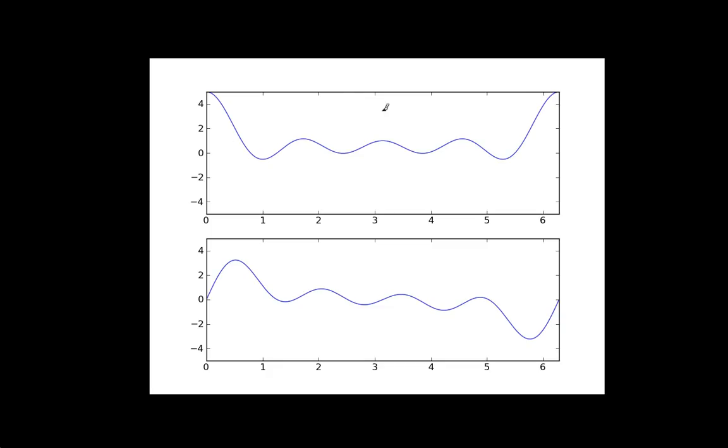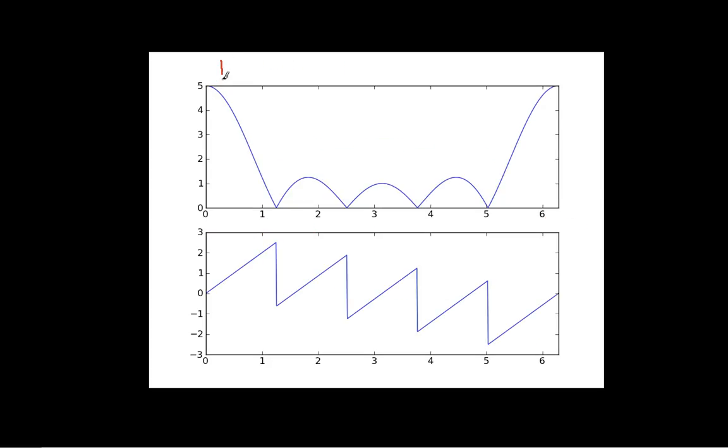So if I plot this, this is ω on the horizontal axis going from 0 to 2π. This is the real part of the Fourier transform, and this is the imaginary part. And I can also plot this in terms of magnitude and phase. This is the magnitude, and this is the phase angle.